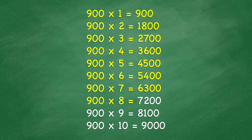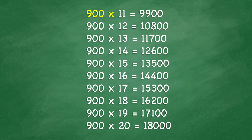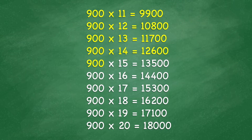900 times 8 equals 7,200. 900 times 9 equals 8,100. 900 times 10 equals 9,000. 900 times 11 equals 9,900. 900 times 12 equals 10,800. 900 times 13 equals 11,700. 900 times 14 equals 12,600. 900 times 15 equals 13,500.